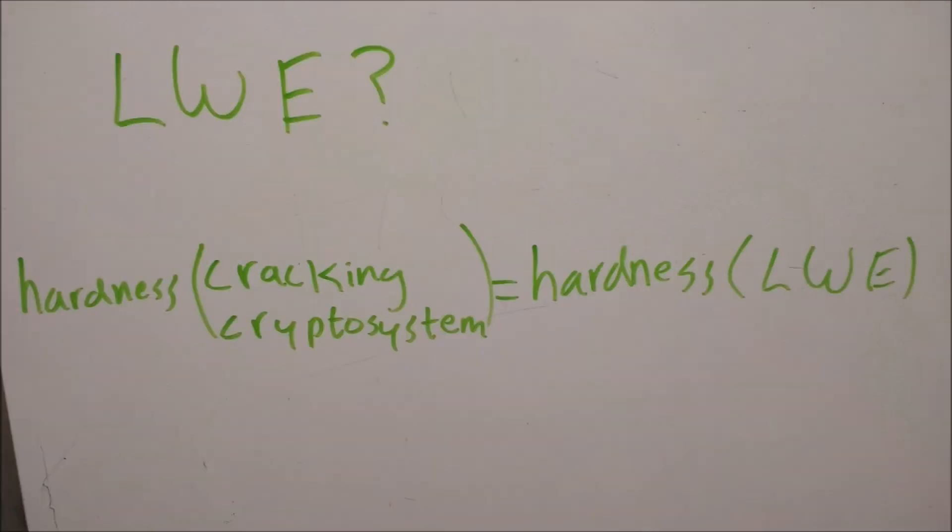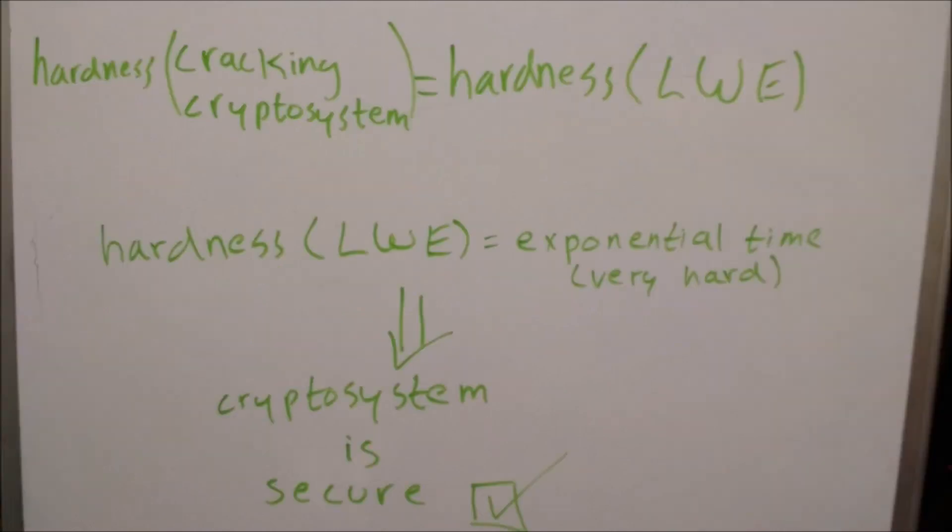Why is this problem hard? Well, the algorithm I just described made no mention of the learning with error problem. But we know that cracking the cryptosystem above is as hard as solving the learning with error problem. And we think that the learning with error problem is hard in the same way we think factoring is hard on standard computers. We don't have a good way of cracking it.